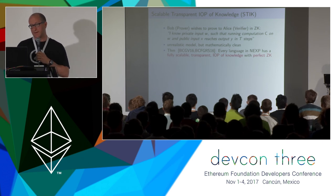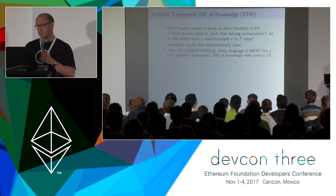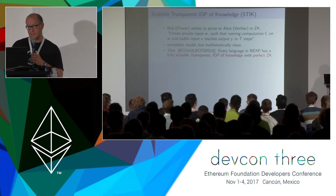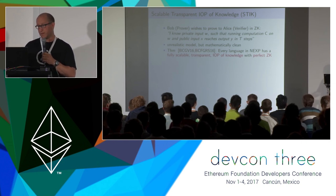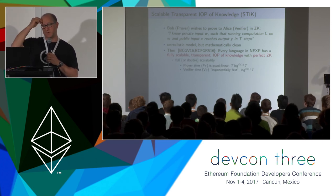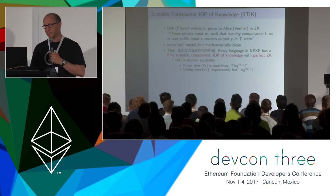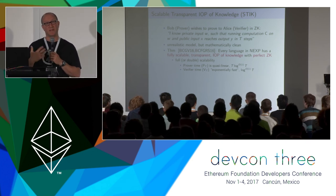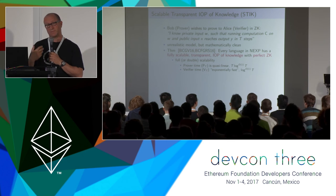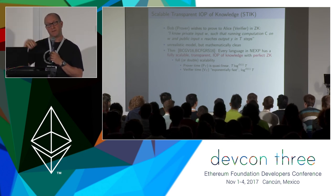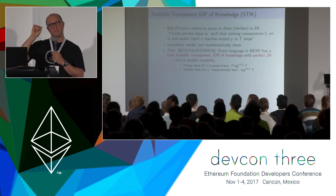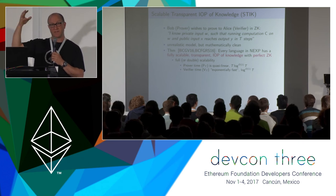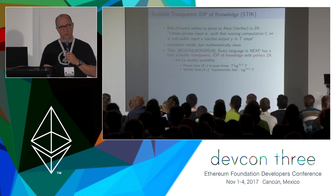This is joint work with Alessandro Chiesa, Ariel Gabizon, Madars Virza — all of us are with Zcash — and follow-up work with Mike Forbes, Michael Liabtsev, and Nick Spooner. Fully scalable or doubly scalable means scalable proving time and scalable verifying time. Prover time scales almost linearly in the time it would have taken just to run the computation — instead of taking T steps, it takes T times log T to some small exponent, sometimes called quasi-linear time.